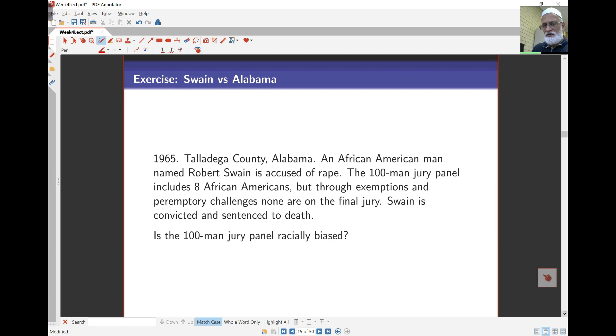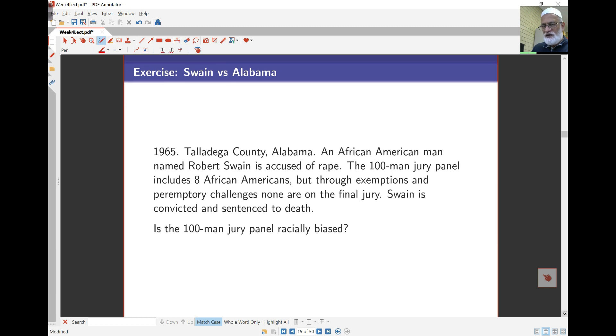Now for this exercise. This is a famous case: Swain vs Alabama in 1965. In Talladega County, Alabama, an African-American man, Robert Swain, was accused of rape. A 100-man jury panel was selected, and on this panel there were only eight African-Americans, although the population of African-Americans in that county was much higher.